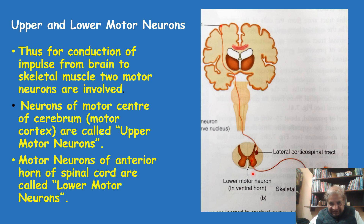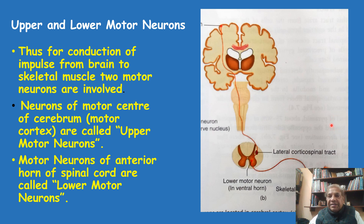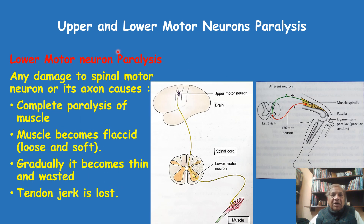If you take the consideration of the cranial nerves, which are present in the brain, their motor neurons are also present in the nucleus of the cranial nerves in a similar way. Let's move to the next slide, where we will learn about what will happen if paralysis takes place.